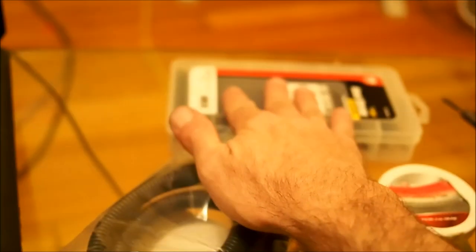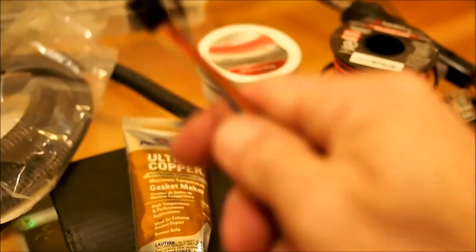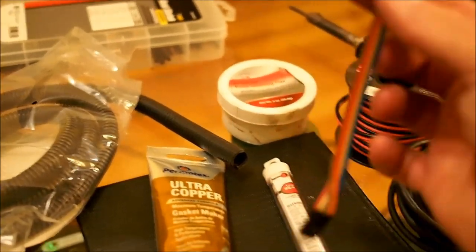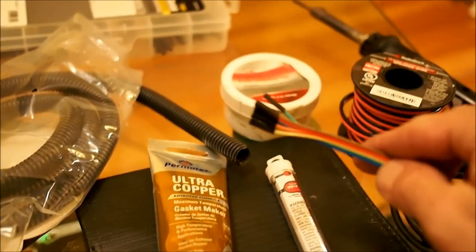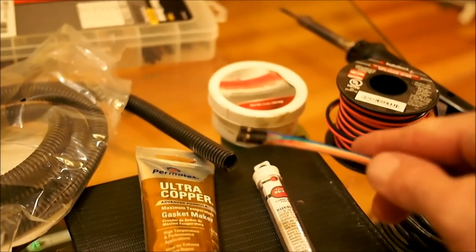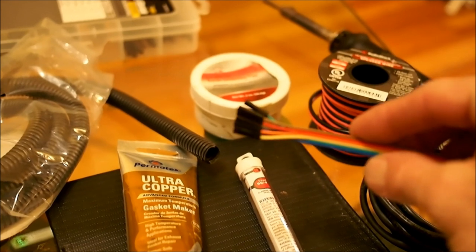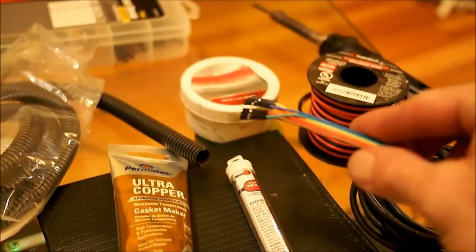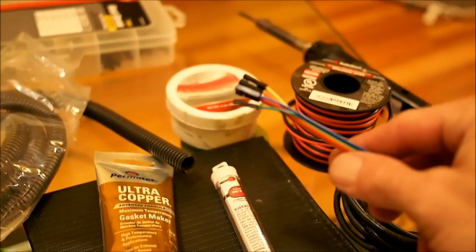Also, we've got some heat shrink tubing here and we've got some normal Arduino style or breadboard style patch cables. We're using the female ends of these. We'll be hooking this to the networking cable where we hook our fan on and also where we hook our thermistor.